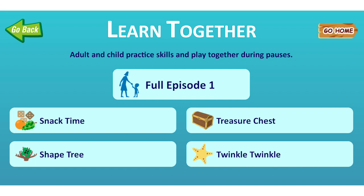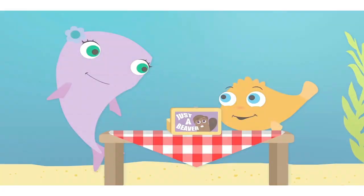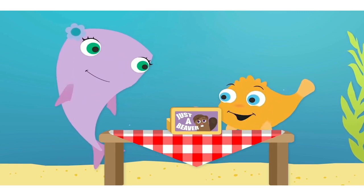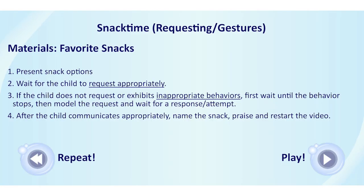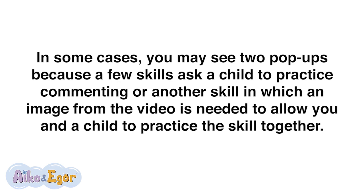Number 3: In Learn Together, each video includes embedded pauses with accompanying instructions that pop up after the characters model a skill. Every skill has a minimum of one pop-up with instructions to allow you to practice the skill with a child in real time. To repeat the brief video model, click Repeat. After your child practices the skill, click Play. In some cases, you may see two pop-ups because a few skills ask a child to practice commenting on another skill in which an image from the video is needed.